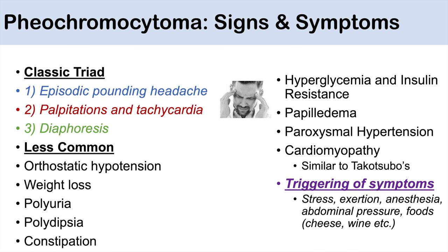Patients with pheochromocytoma can have triggers for their symptoms. These triggers can include stress, exertion, anesthesia, abdominal pressure, and particular tyramine-containing foods like cheese and wine.